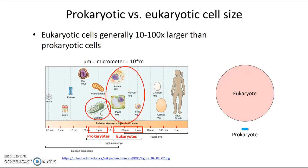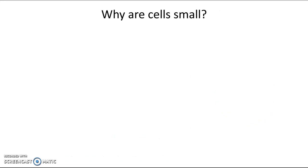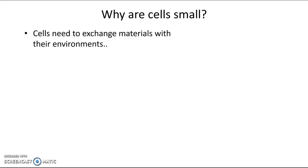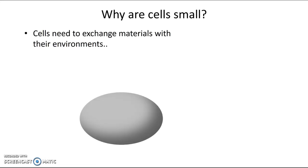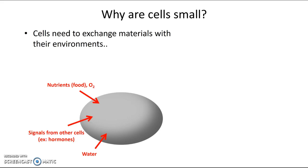In order to understand that, we have to look at how cells interact with their environment. Cells constantly need to exchange materials with their environments. So if this is one of your cells, it's going to need to take in food and oxygen, water, and if it's a cell in a complicated critter like you, it probably has to communicate with other cells, so it needs to take in signal molecules as well. It also has to get rid of waste and send signals to other cells. So there's constantly stuff going in and out of your cells.